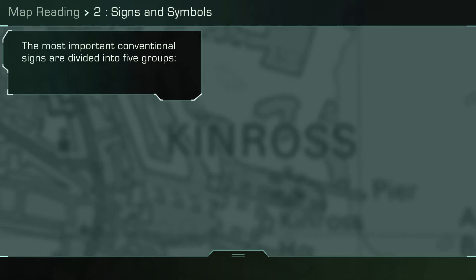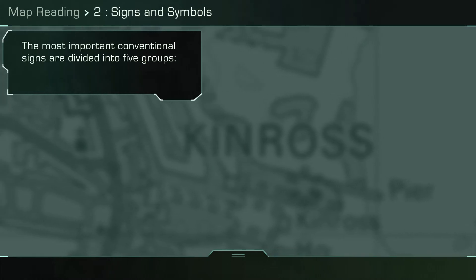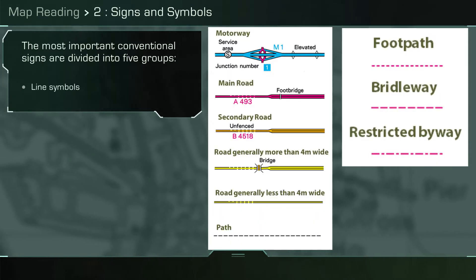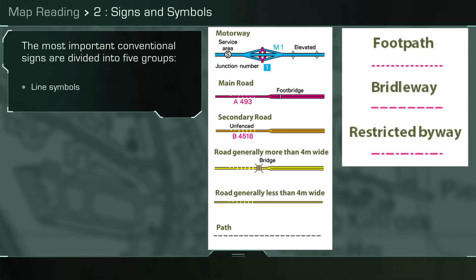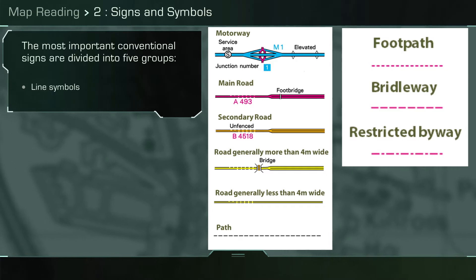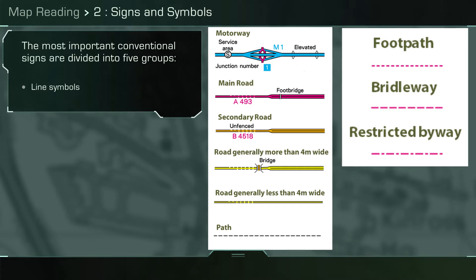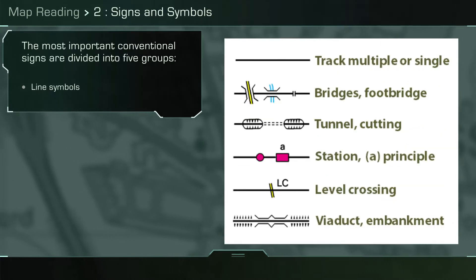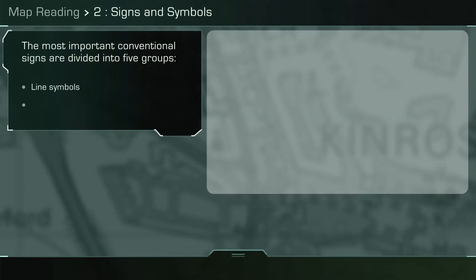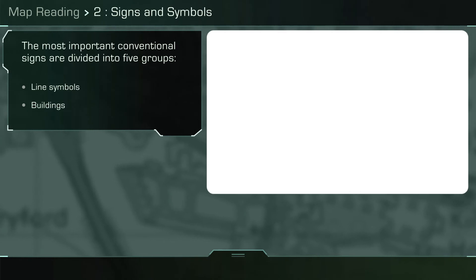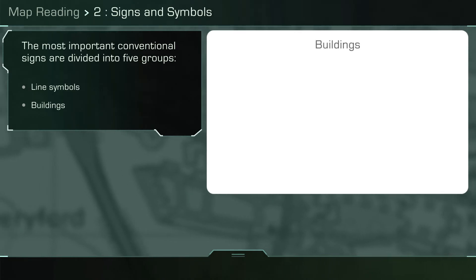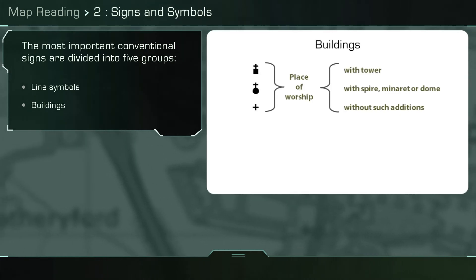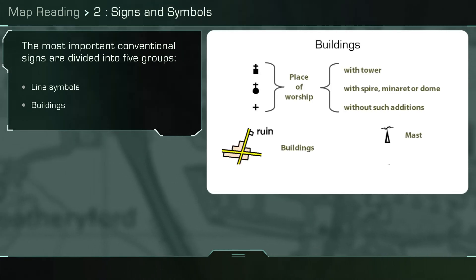Conventional signs are divided into five groups. Line symbols can vary from roads and paths shown here to public rights-of-way and railways. Most buildings are shown by a symbol or a plan of their position, and grid references are given to the center of the symbols.